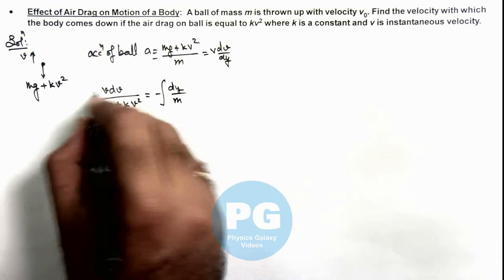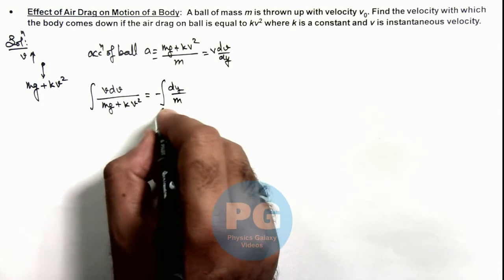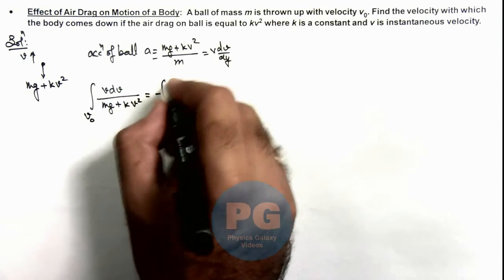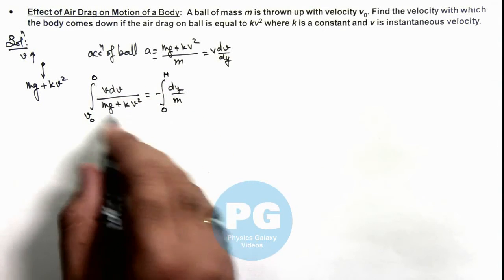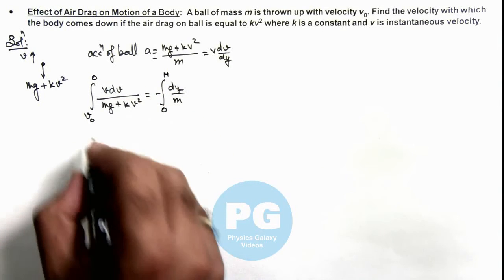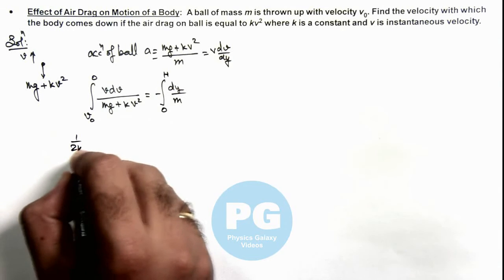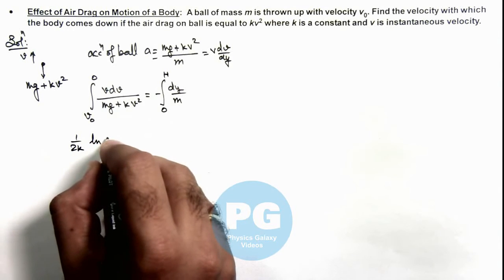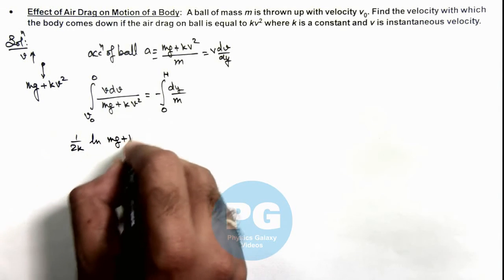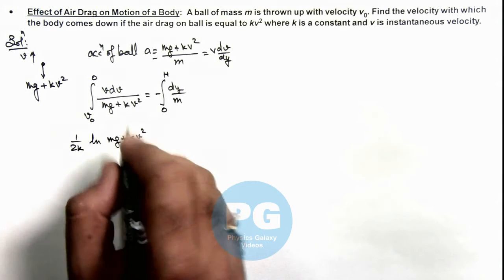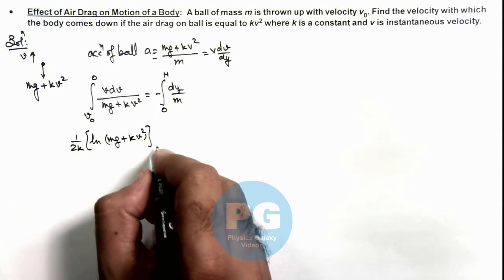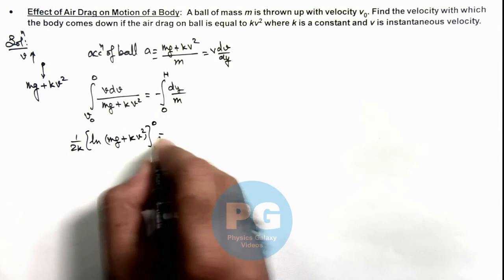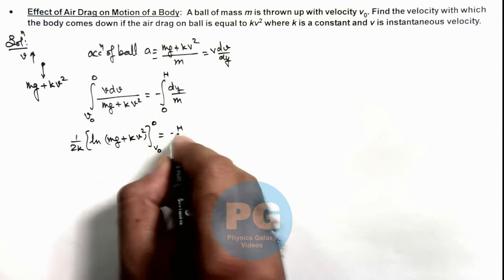And if we integrate it, at y equal to zero the speed was v₀, and at maximum height H the speed becomes zero. So simplifying, this will give us 1 by 2k ln of mg plus kv², and if we substitute the limit from v₀ to zero this is equal to minus of H by m.